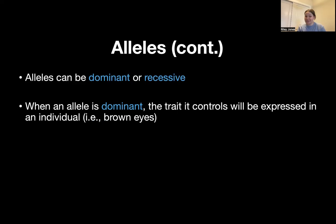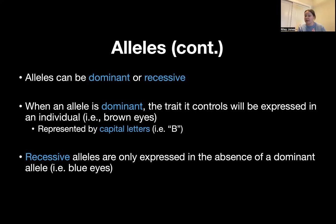So alleles can be dominant or recessive. An allele is dominant when the trait it controls is expressed in an individual. Brown eyes is a really good example of a dominant trait — it overpowers the allele for blue eyes. A lot of those dominant traits are expressed by a capital letter. And recessive alleles are alleles that are only expressed in the absence of that dominant allele. Blue eyes are only seen when they are homozygous for the blue eye trait because they are overpowered when the brown eye trait is present. So if you have brown eyes like me, you might carry a blue eye allele, but because you have one allele for brown eyes, it overpowers the blue eyes. Eye color is much more complicated than that, but that is the simple form of how this genetics works.